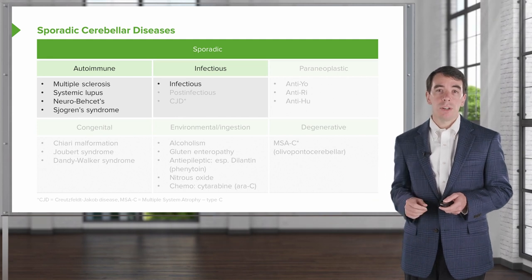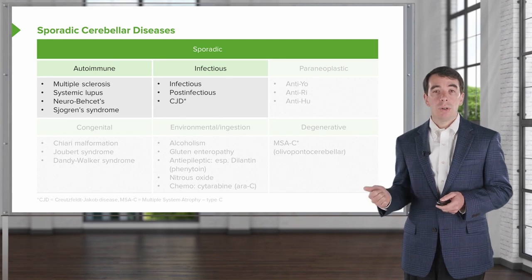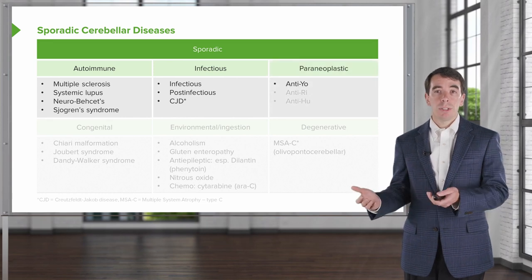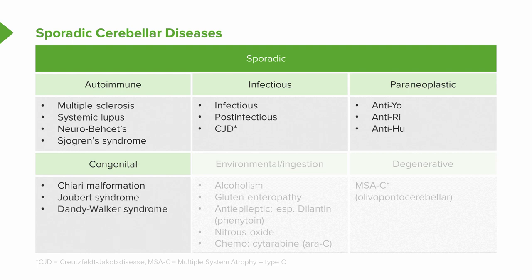We also see infections that can affect the cerebellum — infectious cerebellitis, post-infectious cerebellitis, or even Creutzfeldt-Jakob disease (CJD). Neoplasms can affect the cerebellum as well as paraneoplastic conditions. For paraneoplastic processes, we think about certain antibodies with a predilection for cerebellar cells: anti-Yo, anti-Ri, and anti-Hu. Congenital abnormalities include Chiari malformations (descent of the cerebellar tonsils), Joubert disease, and Dandy-Walker syndrome.